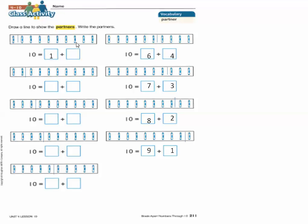Count: one, two, three, four, five, six, seven, eight, nine. So write nine in the right square. One plus nine equals ten. One and nine are partners of ten.